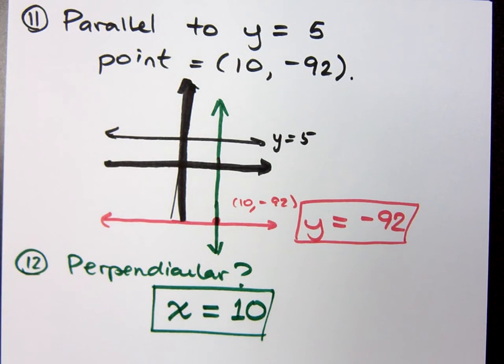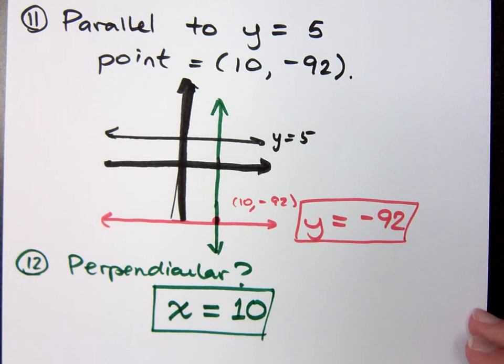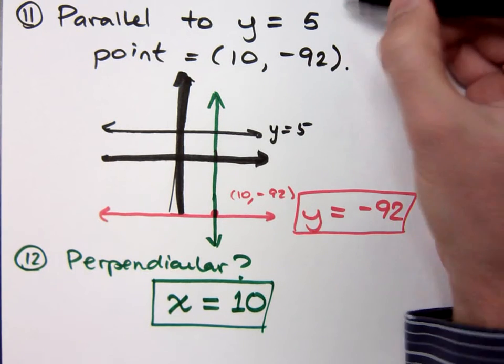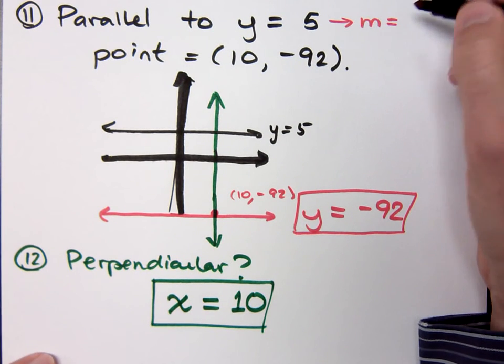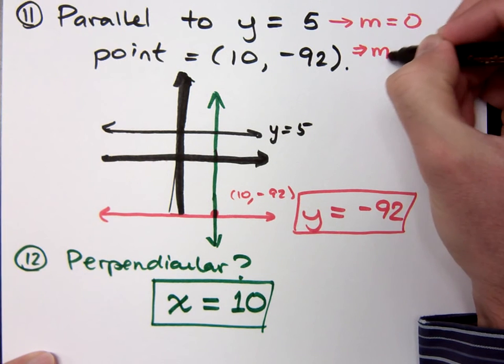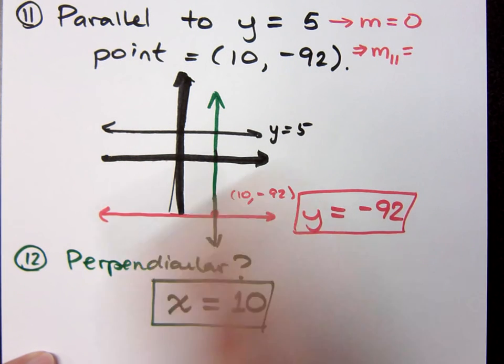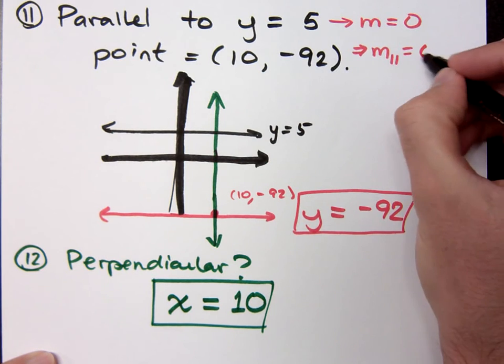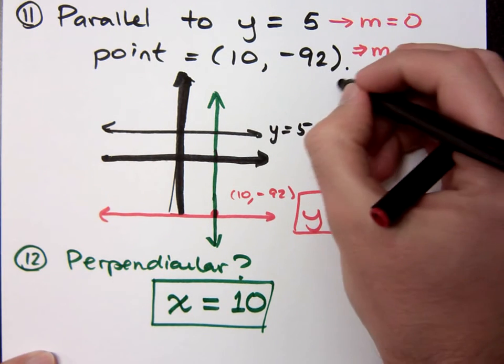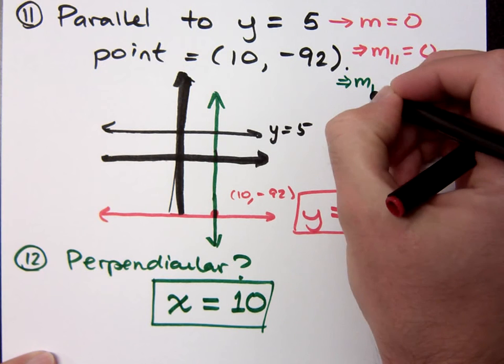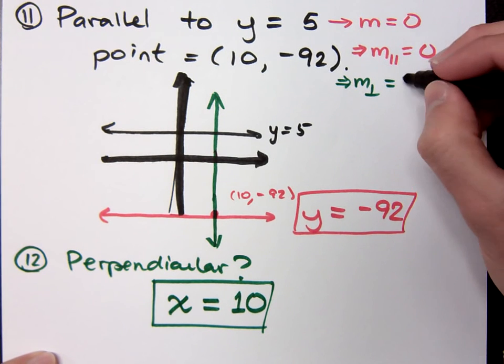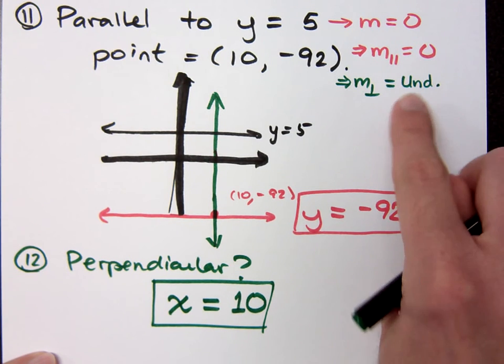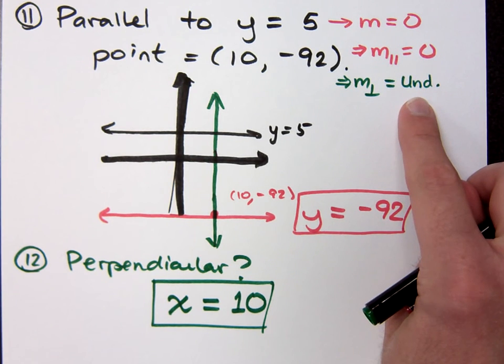See, for problems like this, you really need to draw them out and see what's going on. Because up here, what is the slope for this guy? The slope is 0. So, what is the slope parallel to that? 0. What is the perpendicular slope? Perpendicular slope is undefined, isn't it?